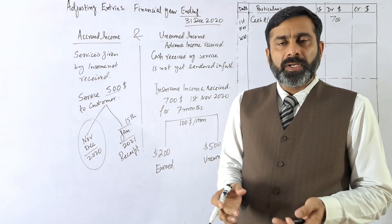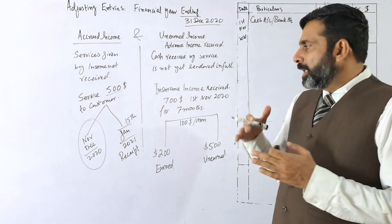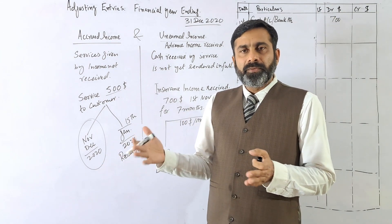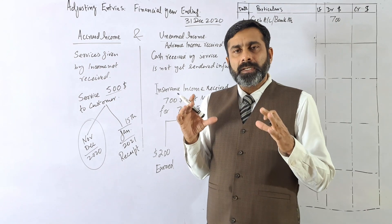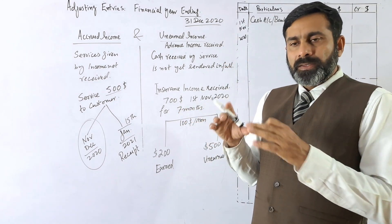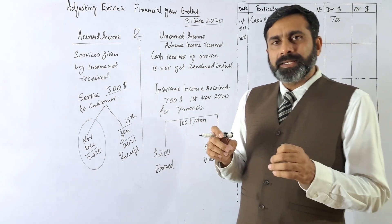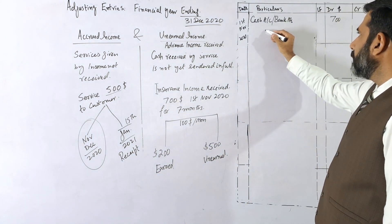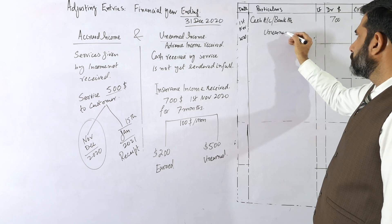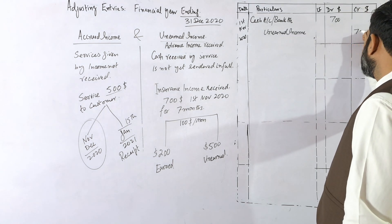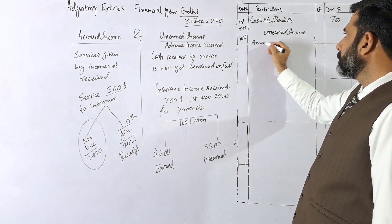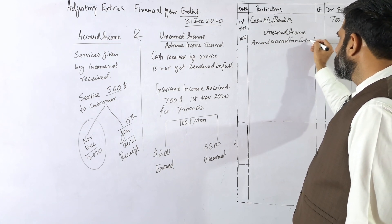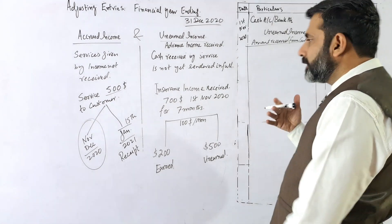This money you have received in advance — the insurance service has not yet been given to the customer. You received the money in advance for the next seven months, so it is not income for you; it is a liability of $700 on that date, because every month for the next seven months you will provide insurance coverage to the customer.